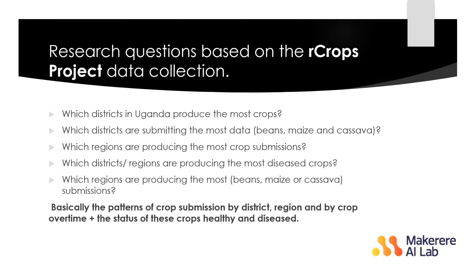The data collected using the AdServ tool includes the status of the crop — whether it was healthy or diseased, with specific diseases picked by experts. It also includes an image of the crop, where a farmer takes a picture of the diseased leaf using a mobile phone, and the location, which is geocoded with the longitude and latitude of the specific point of data collection.